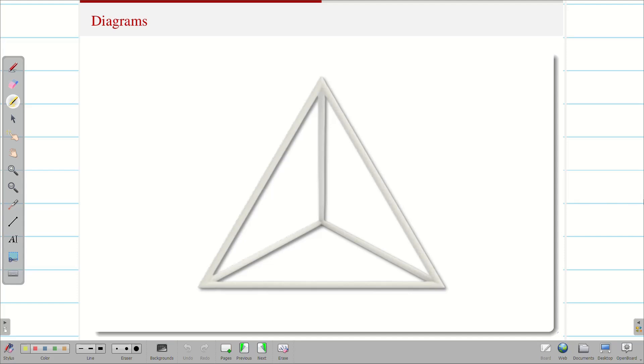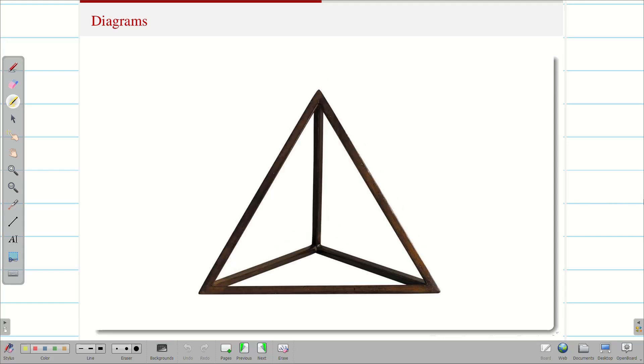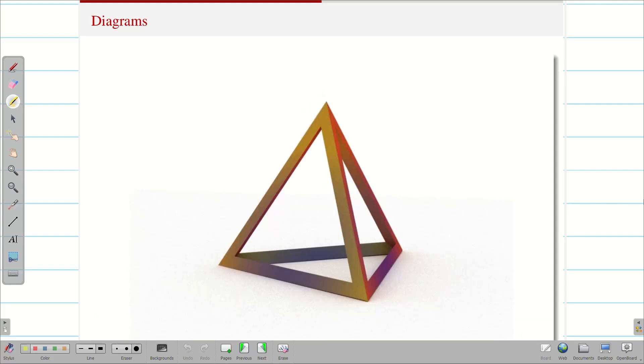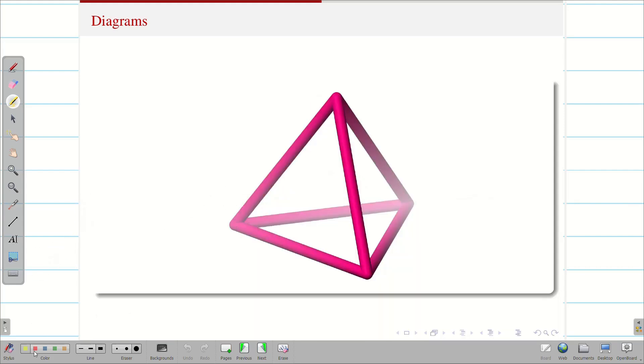For more clarity, you can see this three-dimensional structure. Hope you got the idea. Let me explain this. Let us take the base as the first triangle. The second triangle is one of the faces. The third one, let me mark in red. Now you can easily see the fourth triangle. So, a tetrahedron is made from four different triangles.